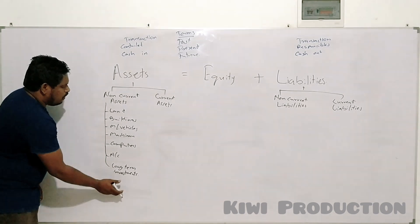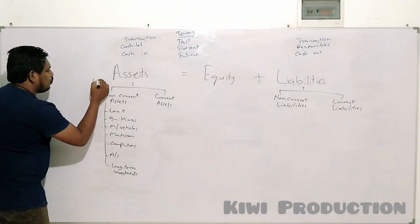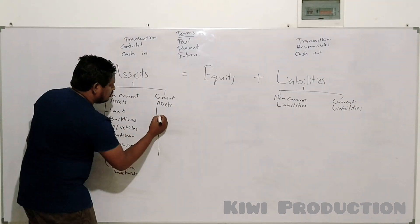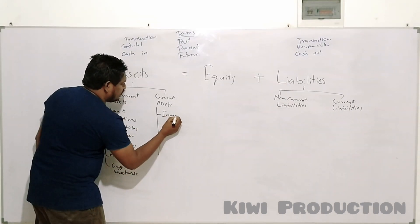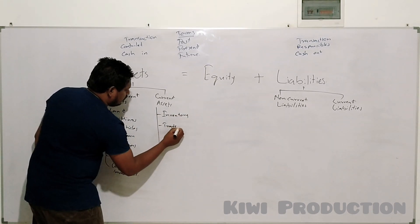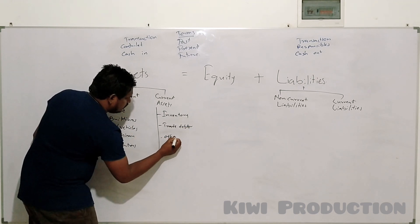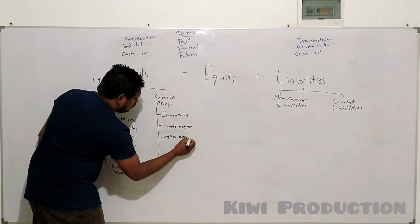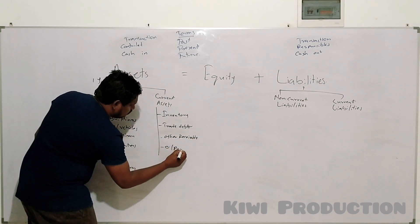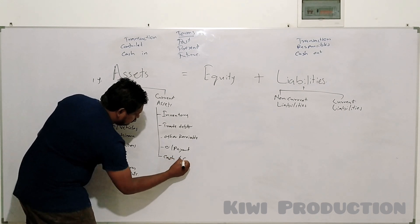Every non-current asset is more than one year old. Current assets you can identify include inventory, trade debtors, other receivables, overpayments, and cash and cash equivalents.